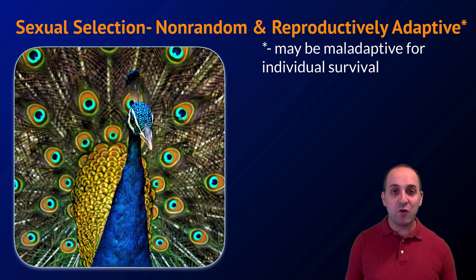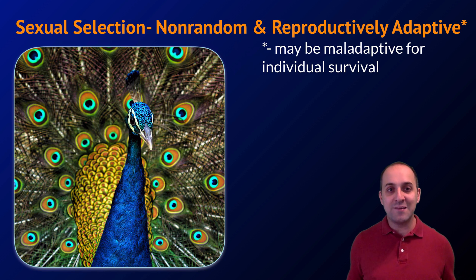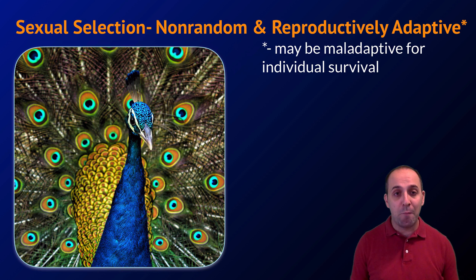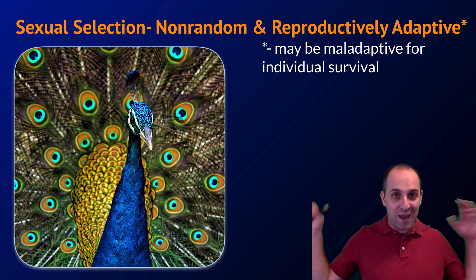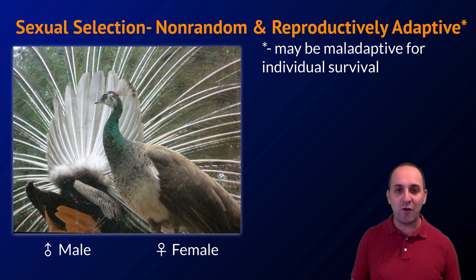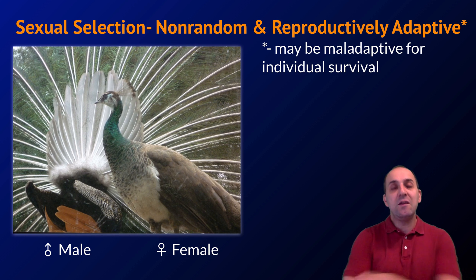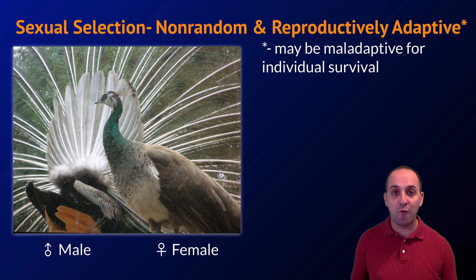The traits that enable an individual to reproduce may in fact be maladaptive for the survival of that individual. Our mascot for sexual selection is the peacock. Peacocks have an ornate and elaborate tail feather arrangement which is beautiful to look at, but is a real disadvantage for the male — it slows them down, makes it hard to fly, and makes them less fit individually, more prone to predation. The peahen, the female, is nowhere near as ornately decorated. Even though the male peacock is at a disadvantage, females prefer to mate with males with ornate tails, so sexual selection drives the evolution of really elaborate tails.